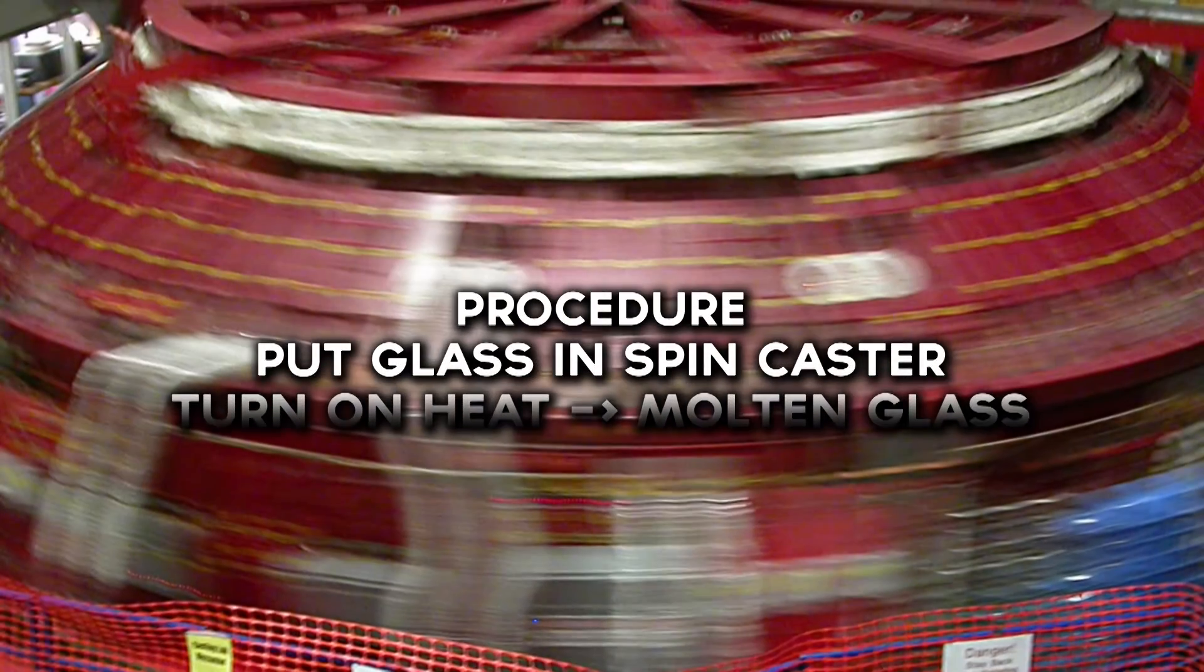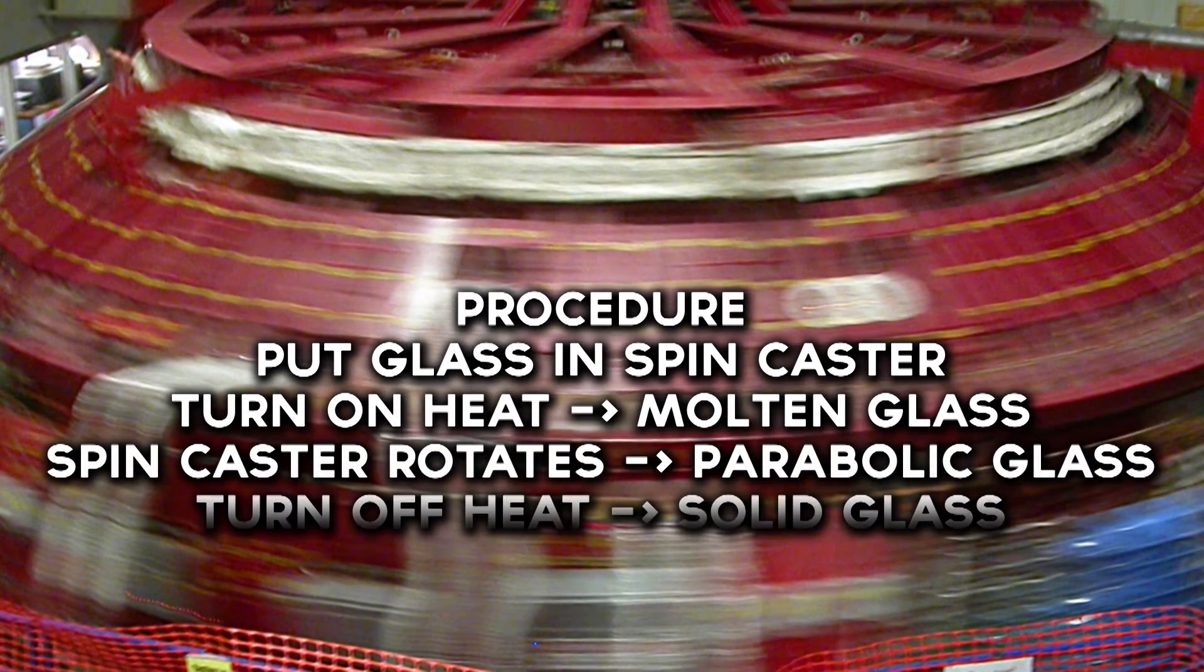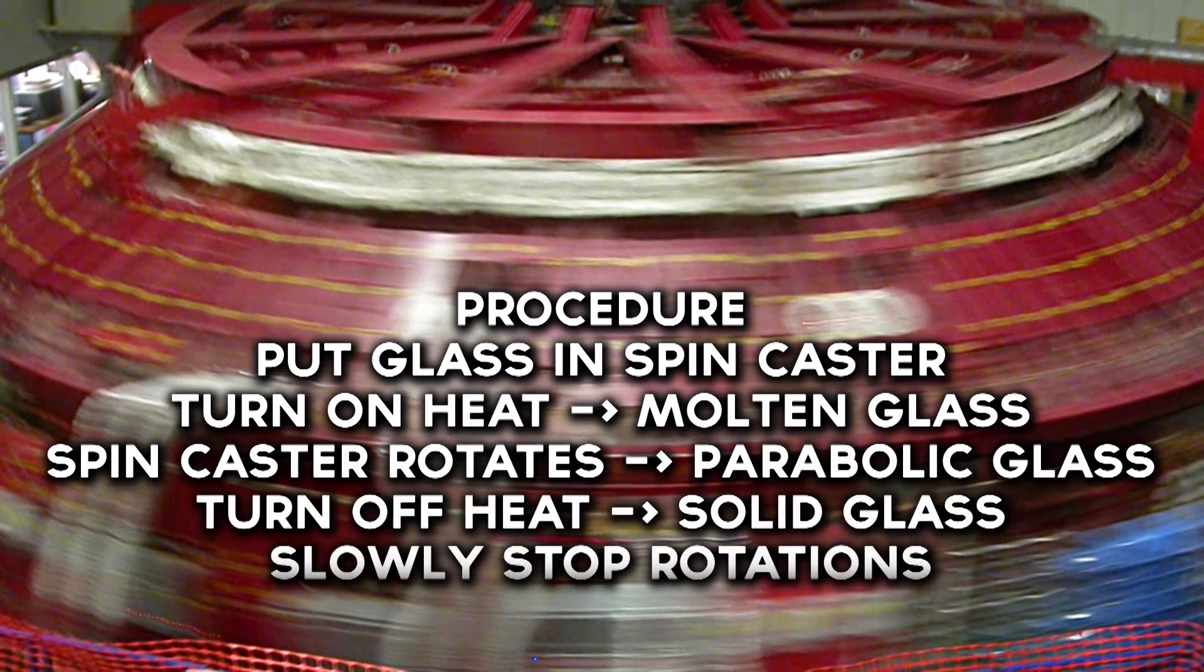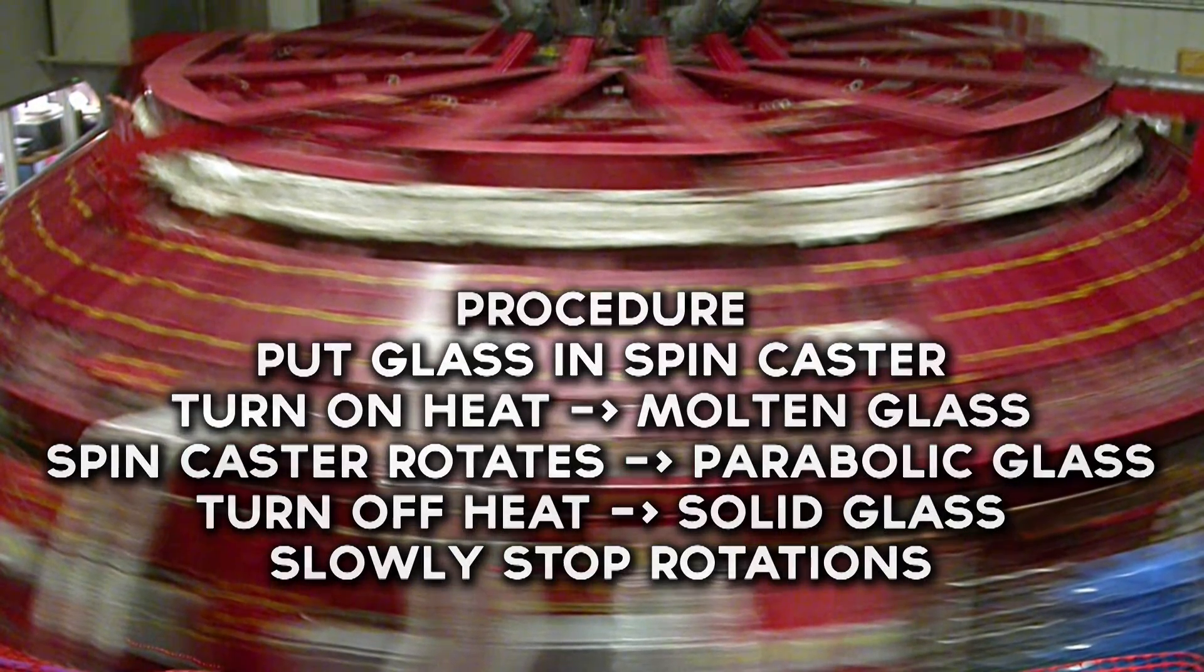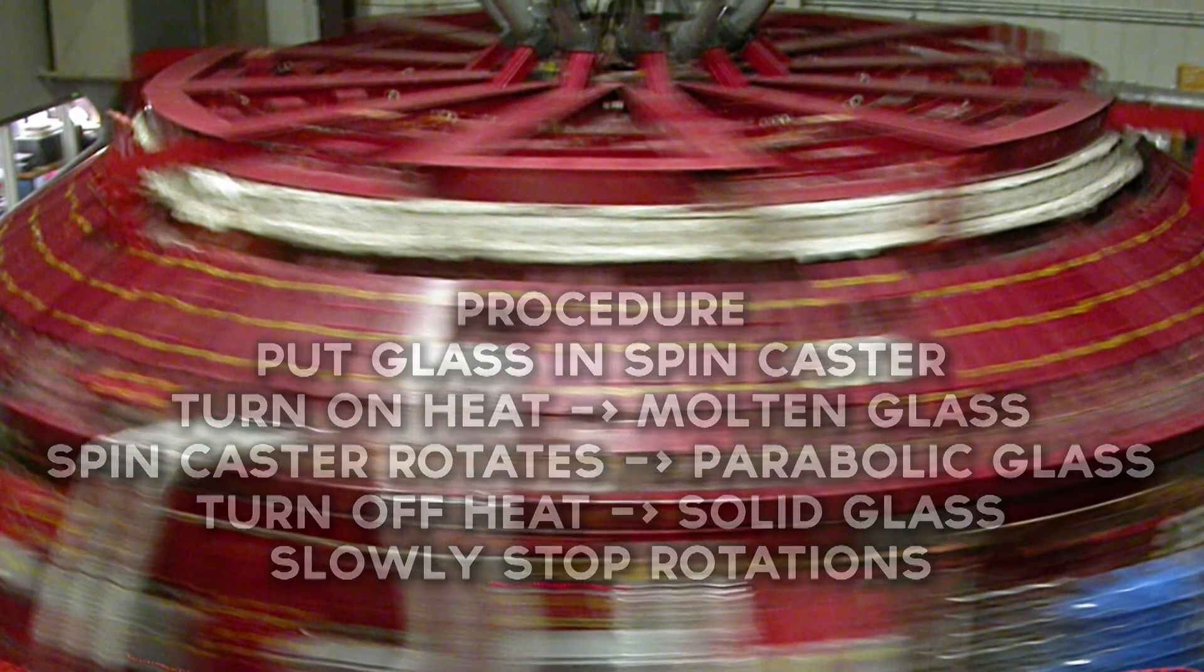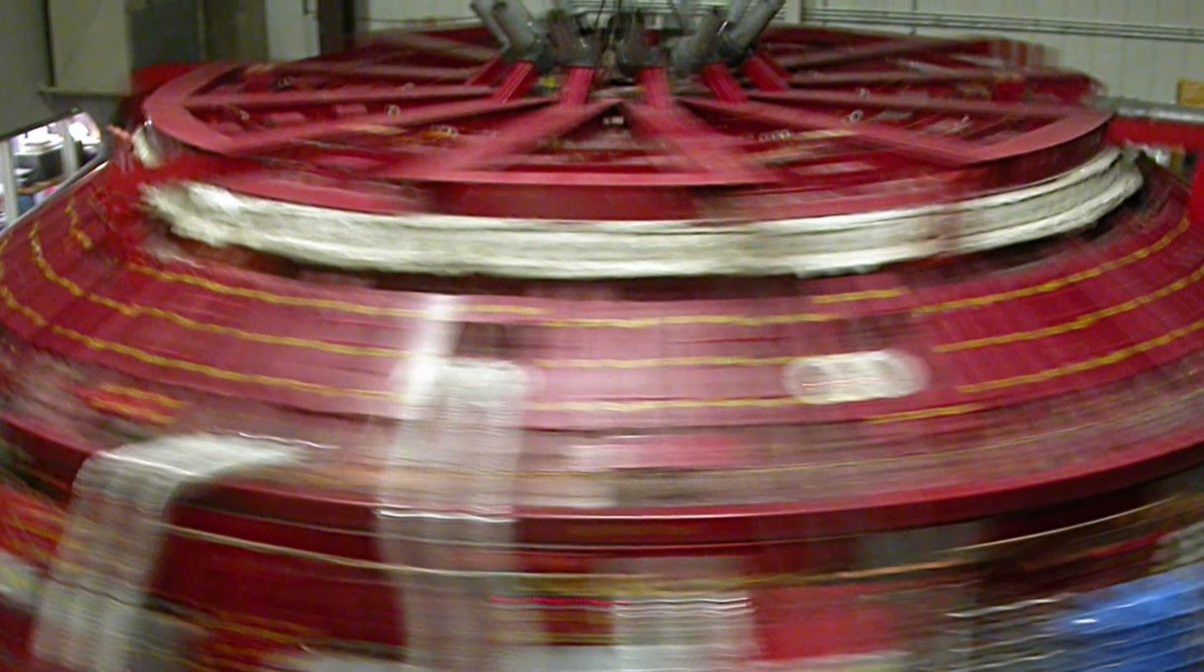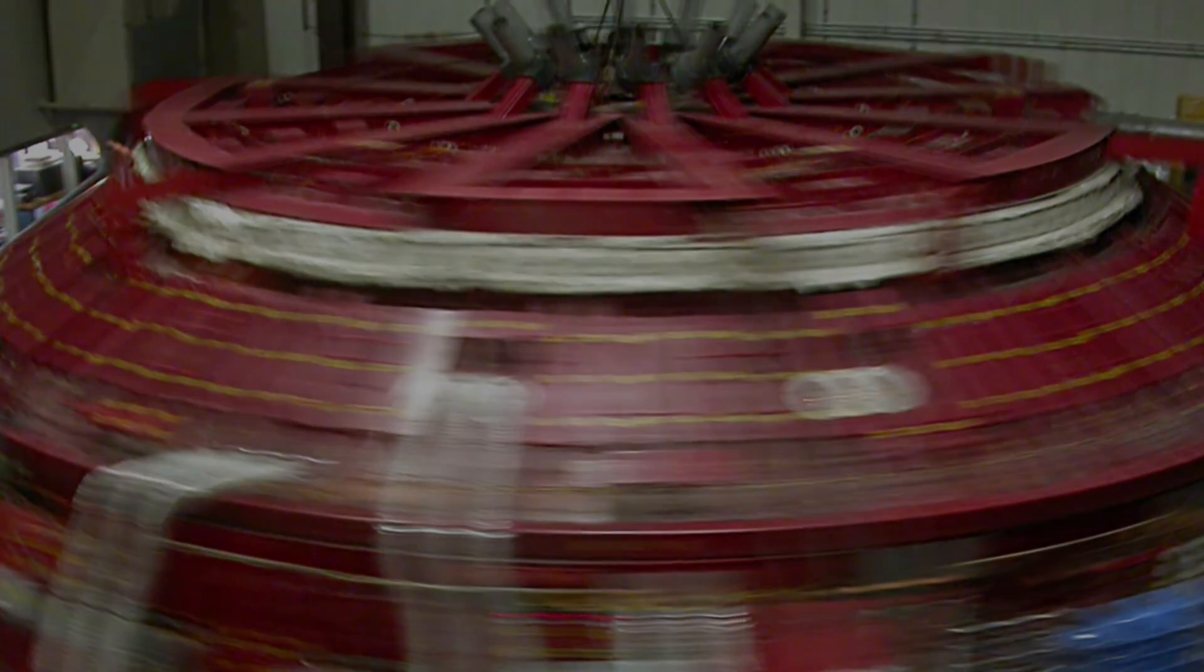Chunks of glass, similar to Pyrex, are heated in the device and once molten are rotated at a precisely calculated rate. Centrifugal forces produce a parabolic shape and then the mirror blank is cooled and allowed to solidify while still rotating. This greatly reduces the labor needed to grind the mirror into the final correct parabolic shape.